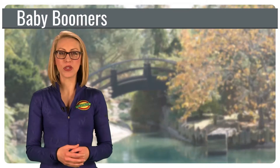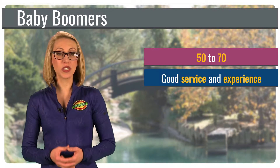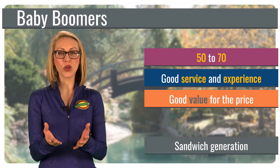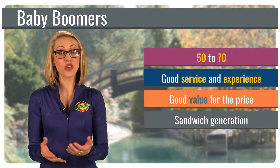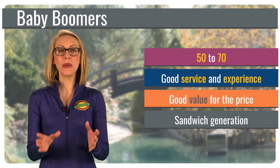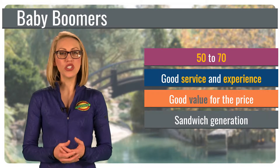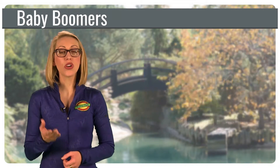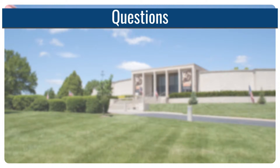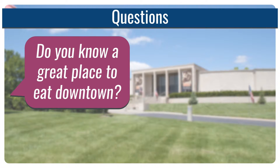We'll start with the baby boomers, ages 50 through 70. This group is willing to pay for good service and a good experience, but they expect good value for the price. Boomers are called the sandwich generation because they're often taking care of their parents and their children or even grandchildren, so there is a big need to make sure everyone is taken care of. So we just talked about two needs for boomers: good value for their money and taking care of family. Knowing these needs, let's go back to our two questions.